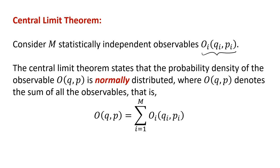The observable O_QP is defined as the sum of all the observables: O_QP equals the sum from i=1 to M of O_i(Q_i, P_i). The main point, highlighted in italicized font, is that it is normally distributed.